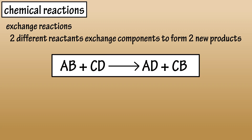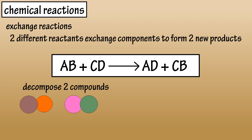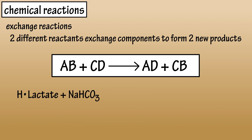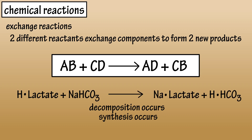An exchange reaction is often written as reactant AB plus reactant CD leading to product AD plus product CB. Exchange reactions basically decompose two compounds and synthesize two new compounds. An example is the reaction of lactic acid and sodium bicarbonate: H-lactate represents lactic acid and NaHCO3 represents sodium bicarbonate. The decomposition and synthesis reactions produce sodium lactate (Na-lactate) and carbonic acid (H-HCO3).